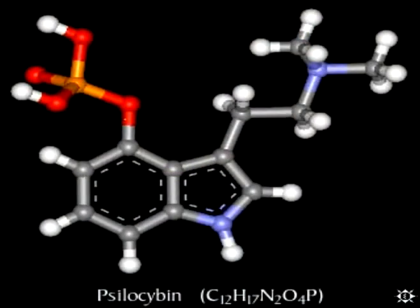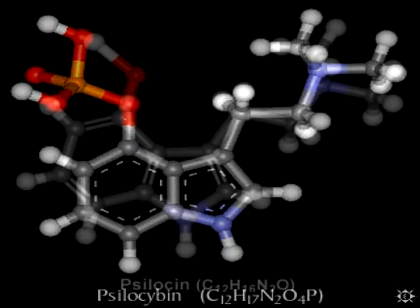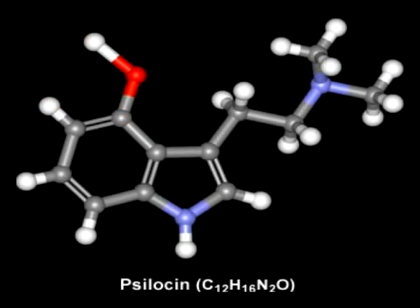Psilocybin is the inactive form of psilocin. Psilocin is what's doing it — psilocybin is converted to psilocin in the body. So it's what pharmacologists call a prodrug: an inactive form that's converted in the body to the active form. Psilocin is 4-hydroxy-DMT. These trivial molecular differences — a methoxy group in the 5-position or a hydroxyl group in the 4-position — make all the difference in terms of oral activity, pharmacokinetics, how they cross the blood-brain barrier, how long they stick around, and how quickly they're metabolized out.